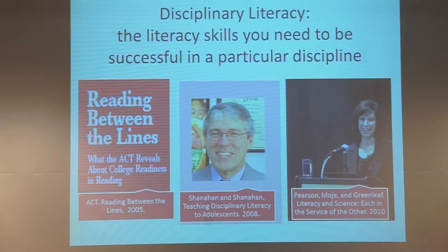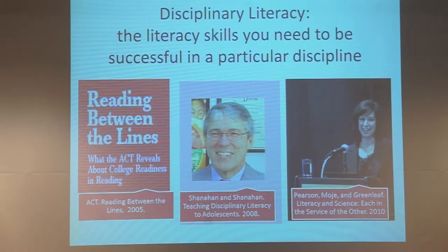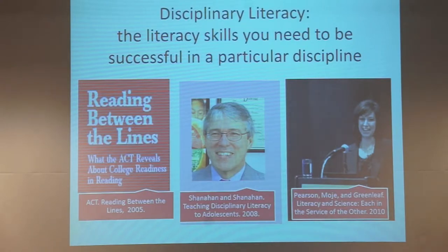We read differently across disciplines, and we never teach kids how to do this — and we aren't born knowing how. Kids learn to read on fiction, mostly, and we push students off the cliff when they get to middle school. We stop teaching them how to read in disciplines. The ones who figure it out do well and the rest don't — and that's really reflected in the ACT, where 50% of kids aren't able to read and make sense of complex text.